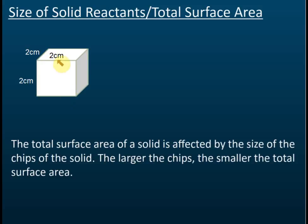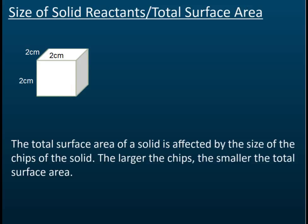If the dimension is 2 by 2, what is the area of one side of this cube? The area is 4 cm². That is correct — 4 cm² for just one side.